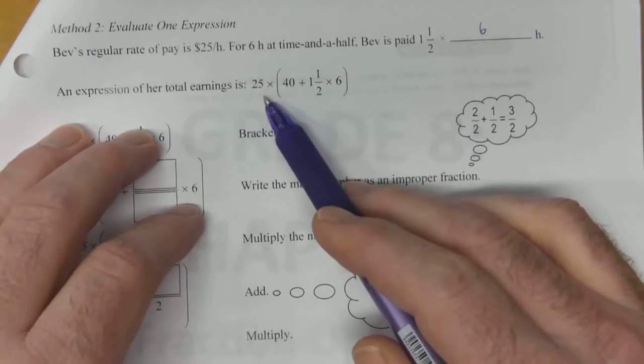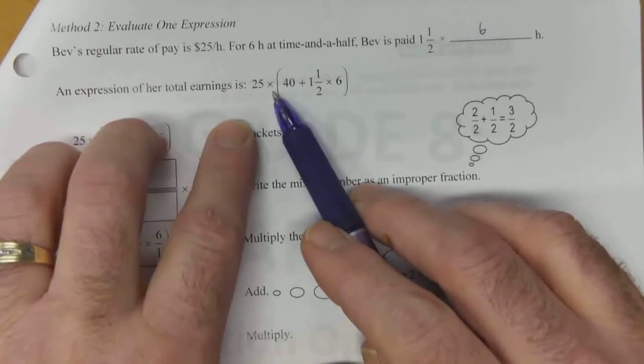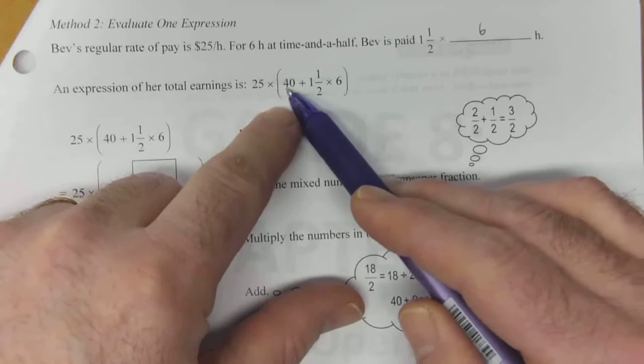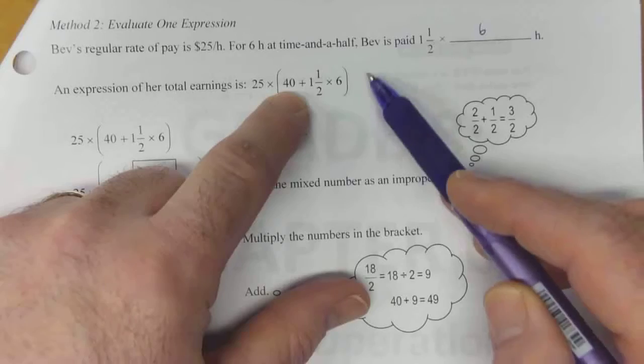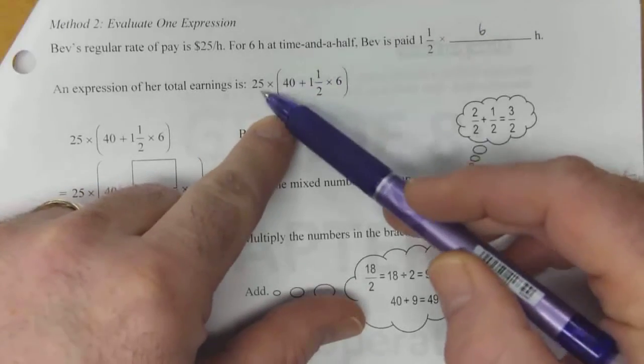So we can say that she makes $25 an hour, and we're multiplying that by the amount of time that she's getting paid for. There's the initial 40, and then this six we're multiplying by time and a half. So we can set this up using brackets.